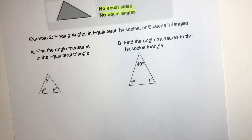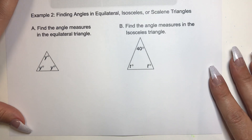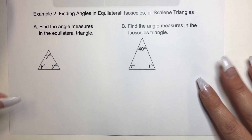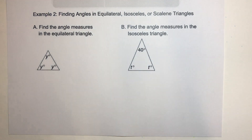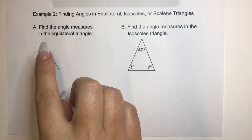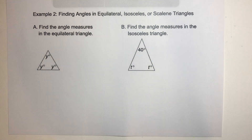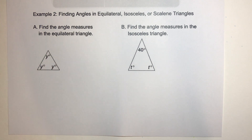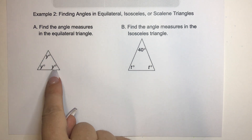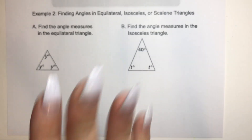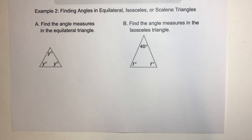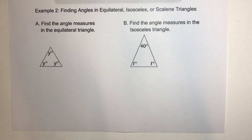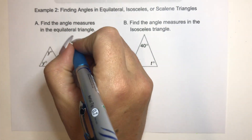Let's go to Example 2 — finding angles in equilateral, isosceles, and scalene triangles. Part A says find the angle measures in an equilateral triangle. We have no numbers, just y, y, and y. But we know the triangle sum theorem — all of the angle measures add up to 180 degrees. So we just add all of these up: y plus y plus y equals 180.